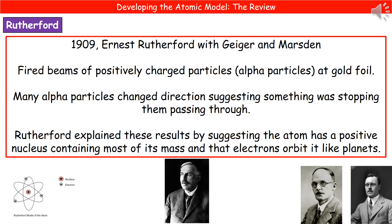Our third scientist is Ernest Rutherford, in 1909, working alongside two other scientists called Geiger and Marsden. They did an experiment firing positively charged alpha particles at thin pieces of gold foil. If the plum pudding model was correct, they expected the alpha particles to go straight through. But that wasn't what they saw — many alpha particles changed direction, suggesting there was something stopping them from going straight through.